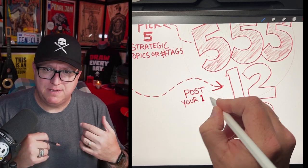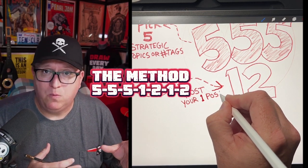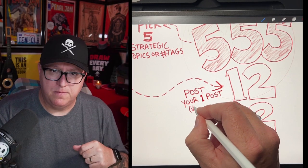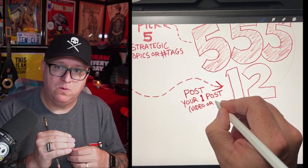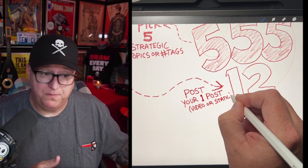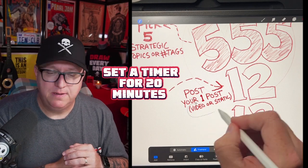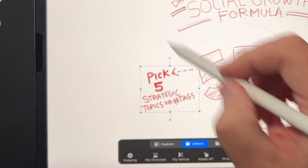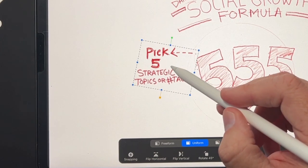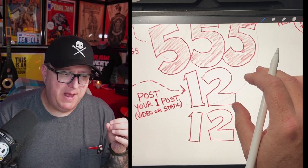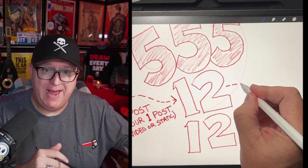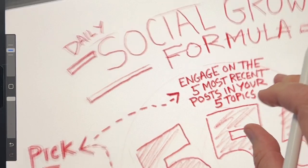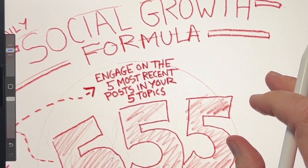Step three — this is the method to the madness. This is a framework I developed for myself called 555-1212. It works great on Instagram, LinkedIn, or anywhere you can search hashtags or trending topics. Set a timer for 20 minutes and see how much you can actually do. Don't leave the platform in those 20 minutes. The first five: find five strategic hashtags in your niche to follow and engage with — tags with a pretty decent amount of posts every day, ideally several posts per hour. Once you've found your tags, go in and sort by most recent top posts. The second five: engage with five posts in each of those five topics. Like that post, comment, and be truly authentic about it — no spam or copy-paste.